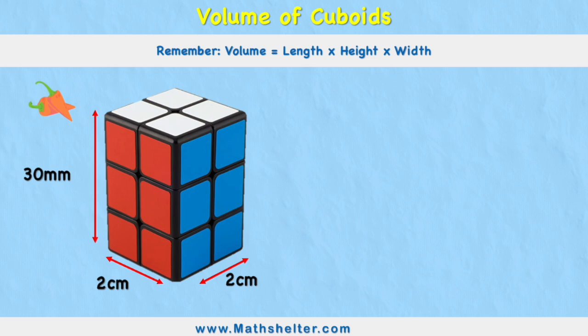So an easier way of looking at it is if we had a shape like this, where we can literally see the cubes. And I can see that my length is 2cm, my height is 30mm, and my width is 2cm.